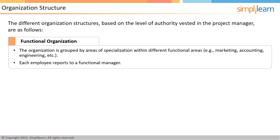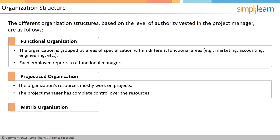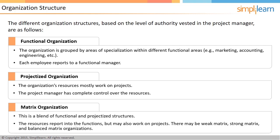Team members do their normal departmental work in addition to the project work. In a projectized organization, there are no departments — the organization's resources mostly work on projects, team members report to a project manager, and the project manager has complete control over the resources. When a project is completed, team members either move on to another project or look for work outside the company. The matrix organization is a blend of functional and projectized organizational structures. A team member belongs to a department as well as being part of a project team, giving them two bosses: their department head and their project manager.